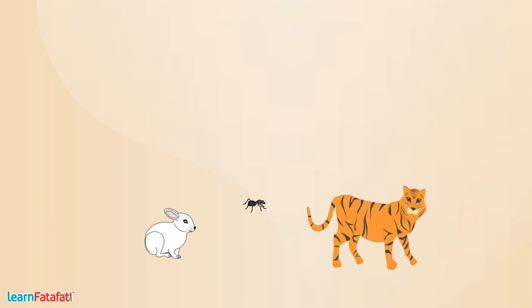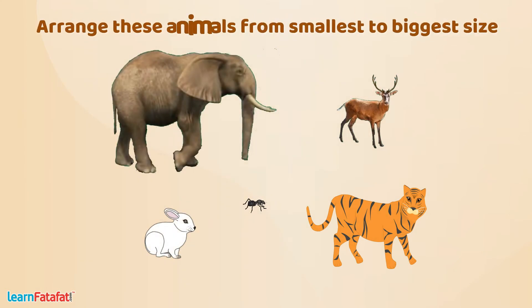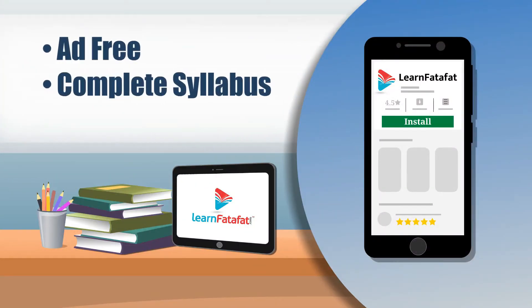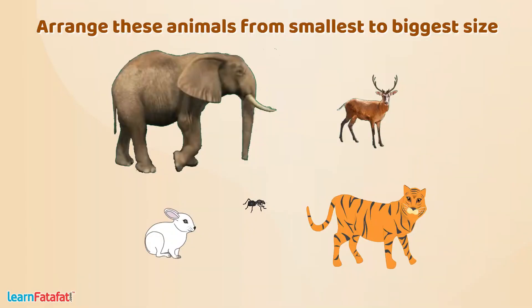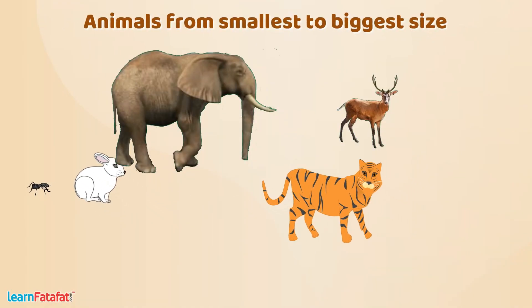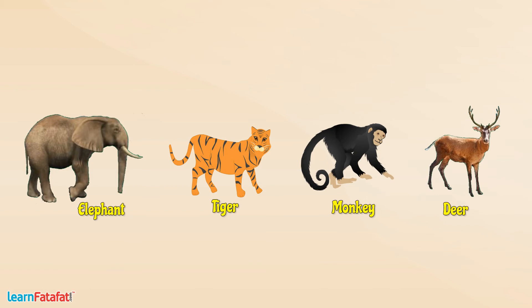Now look at these animals — they are all of different sizes. Can you arrange these animals in order of their size from smallest to biggest? Yes, like this we can arrange them from smallest to biggest.